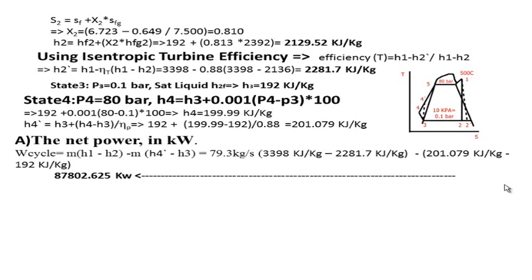After we found all the enthalpies around the cycle, now we can start finding the requirements. First, the net power in kilowatt. The net power of the cycle can be found by subtracting the pump work from the turbine work. The net power work of the cycle is mass times enthalpy drop across the turbine minus mass of steam times the enthalpy change across the pump. That ends up with almost 87.8 megawatt, or 87,800 kilowatt.